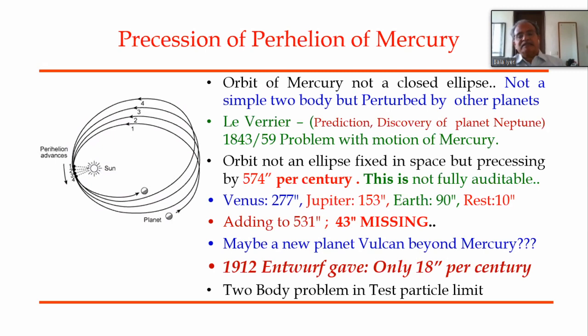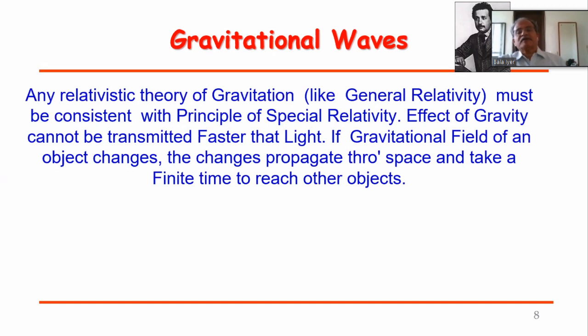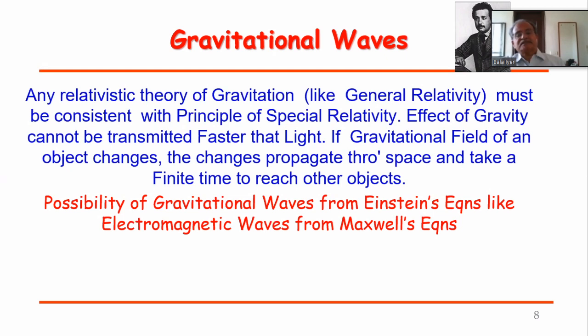This analysis shows we are dealing with the two-body problem in general relativity in what we call the test particle limit — Mercury's effect on the gravitational field is not taken into account since it orbits the sun as a test particle. Any relativistic theory of gravitation must be consistent with special relativity, so the effect of gravity cannot be transmitted faster than light. When the gravitational field of an object changes, these changes propagate through space and take finite time to reach other objects.